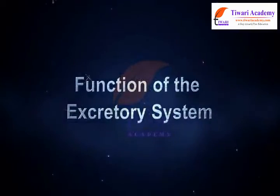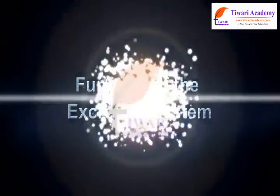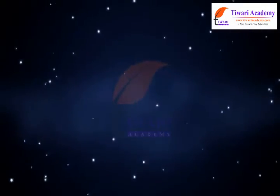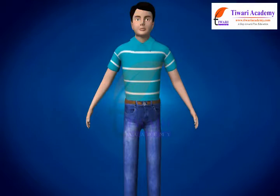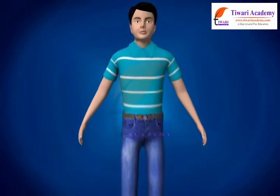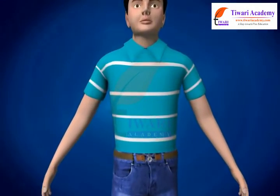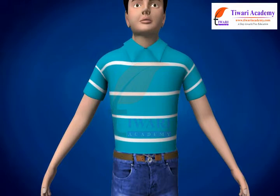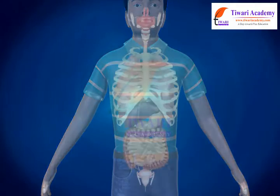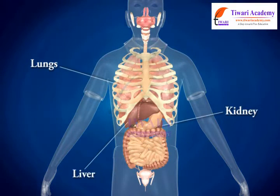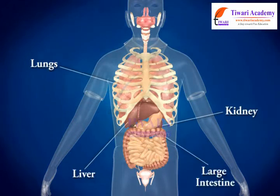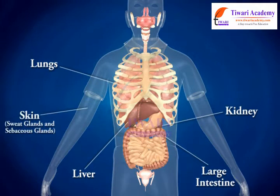Functions of excretory system: dear students, there are various organs in our body that form part of the excretory system. These include kidneys, lungs, liver, large intestine, skin, sweat glands, and sebaceous glands.